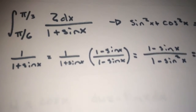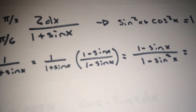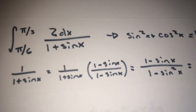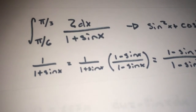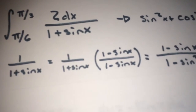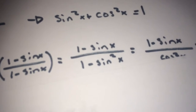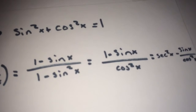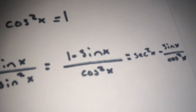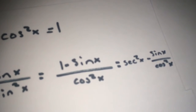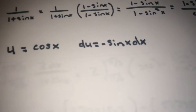For this one, you need to multiply by the conjugate — top and bottom by (1 minus sine x). That gives (1 minus sine x) over (1 minus sine squared x). Using the identity, substitute to get (1 minus sine x) over cosine squared x, which splits into secant squared x minus sine x over cosine squared x. Then use u-substitution: u equals cosine x, du equals negative sine x dx.